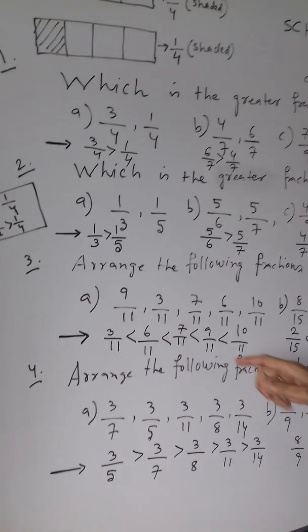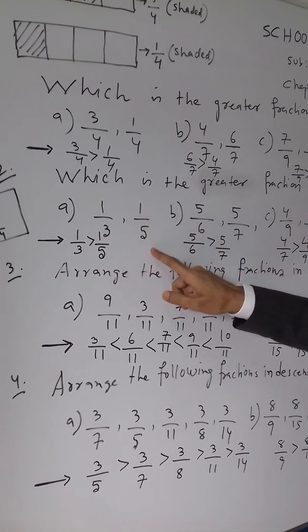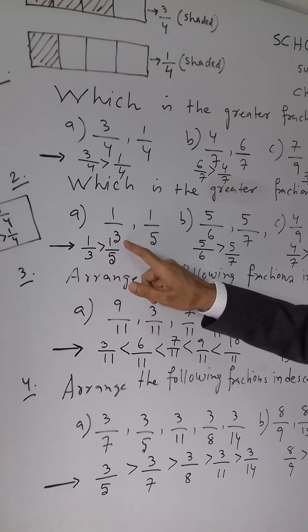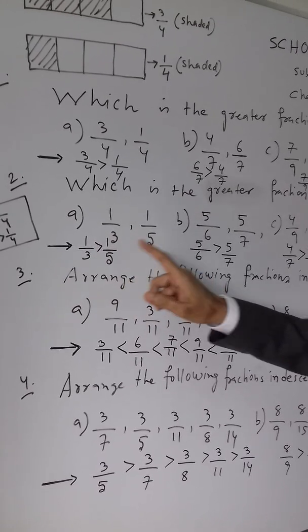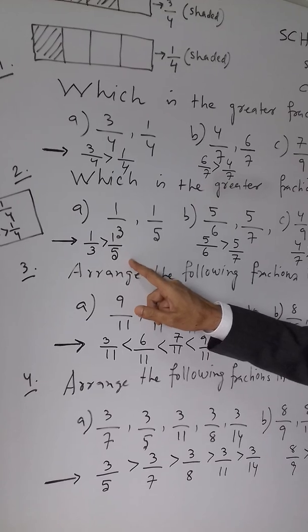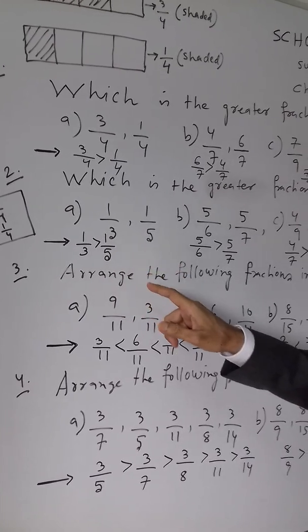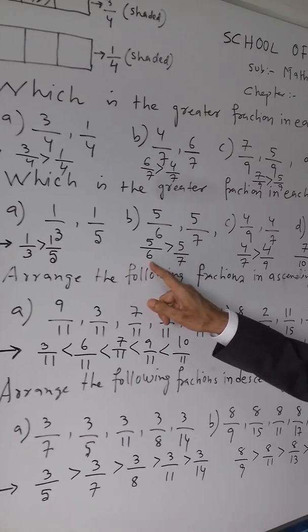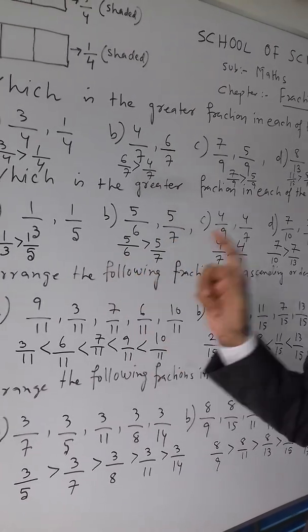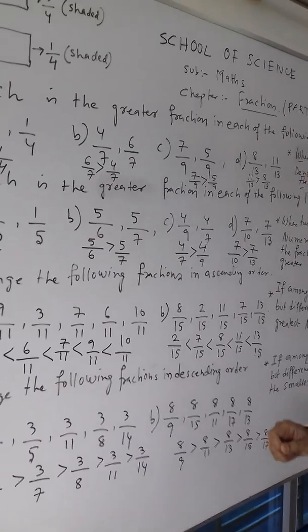Now suppose 1 by 3 and 1 by 5 — which one is greater? 3 is less than 5, so 1 by 3 is greater than 1 by 5. You must see the denominator, and the denominator which is the lowest — that fraction is the greatest one.